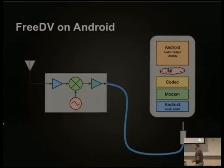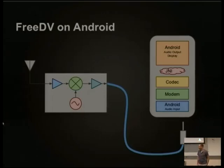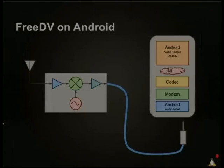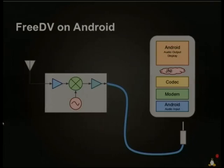Now let's talk about the software. At university I studied Java programming, but I'm generally a C programmer and I didn't want to rewrite all of the complicated signal processing code that David had written. So the way I chose to implement it on the phone was to have native C code compiled in and use JNI — Java Native Interface — which is a way of feeding data between C code and Java code. That's that little cloud-looking thing in the middle between the codec and the Android side.